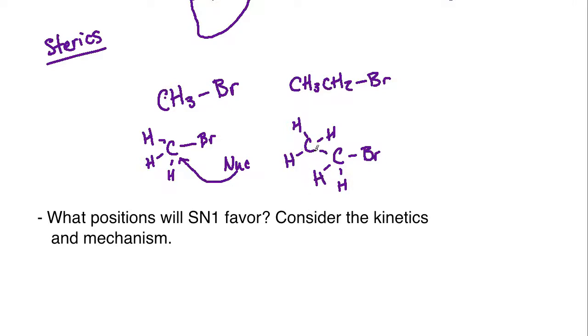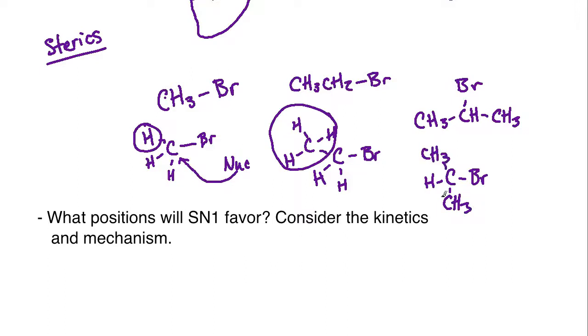When we have methyl groups, these are going to be the least sterically hindered of the bunch because this carbon only has three hydrogens. Hydrogens are relatively small atoms in comparison to everything else, so it's easier for the nucleophile to come in to this site that only has three hydrogens. As we move from methyl to primary, the leaving group is attached to a carbon with two hydrogens and also a methyl group. A methyl group is more sterically cumbersome than the hydrogens.